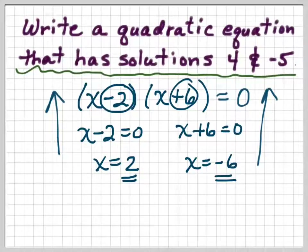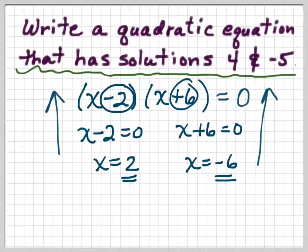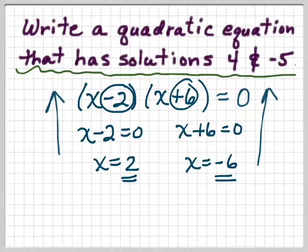If you have 2 as your answer and you work backwards, you wind up with x minus 2. And if you have negative 6, you work backwards and you had x plus 6. This is the easiest one — it has no other numbers to divide or multiply.